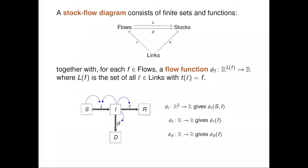A stock flow diagram, in a more mathematical way, is a set of flows, a set of stocks, and a set of links. Every link has a source, which is a stock, and a target, which is a flow. Also, each flow has an upstream and a downstream stock. This flow here goes from the upstream stock S to the downstream stock I. That covers the pictorial part, but then there are these flow functions: for each flow, you have a flow function from R to something to R, where that something is the set of all links whose target is that flow.